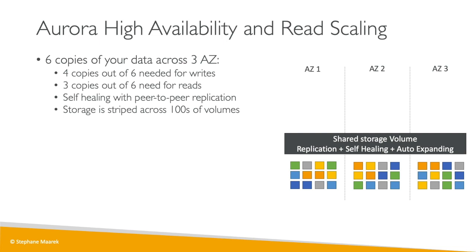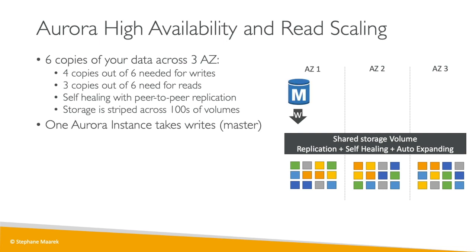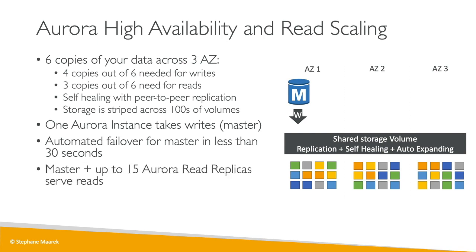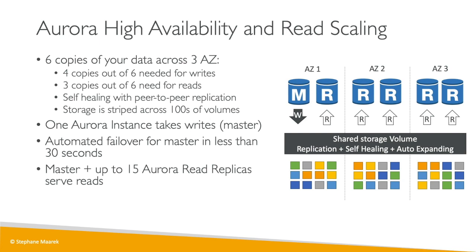Aurora is like Multi-AZ for RDS — there is only one instance that takes writes, called the master. If the master doesn't work, failover happens in less than 30 seconds on average, which is really quick. On top of the master, you can have up to 15 read replicas all serving reads. Any of these read replicas can become the master in case the master fails, though by default you only have one master.